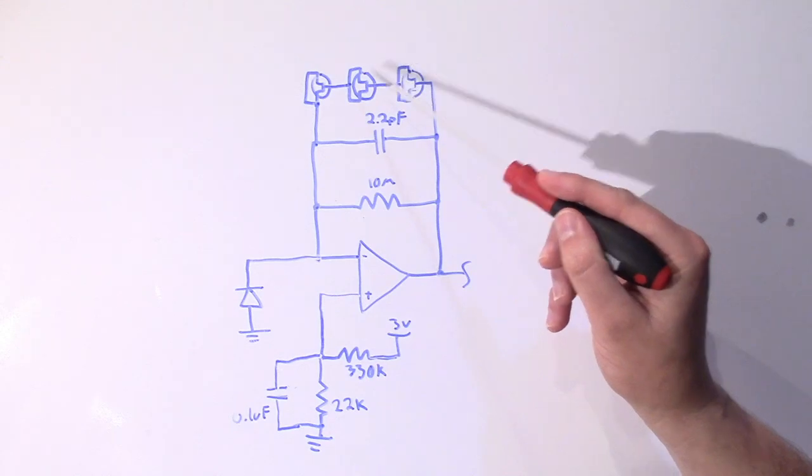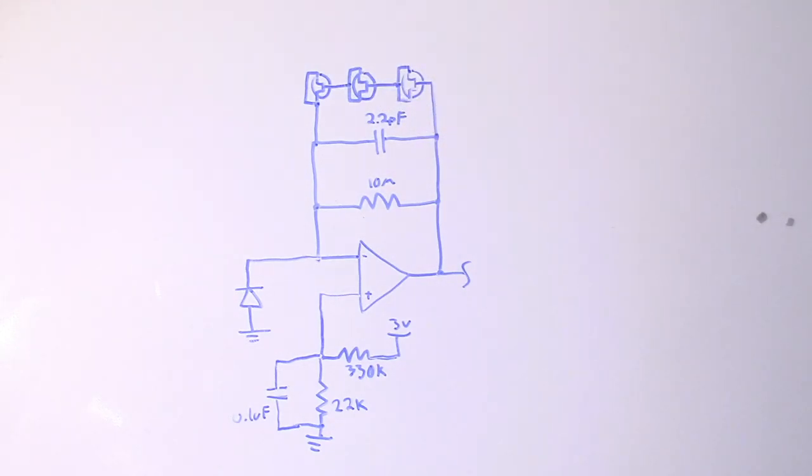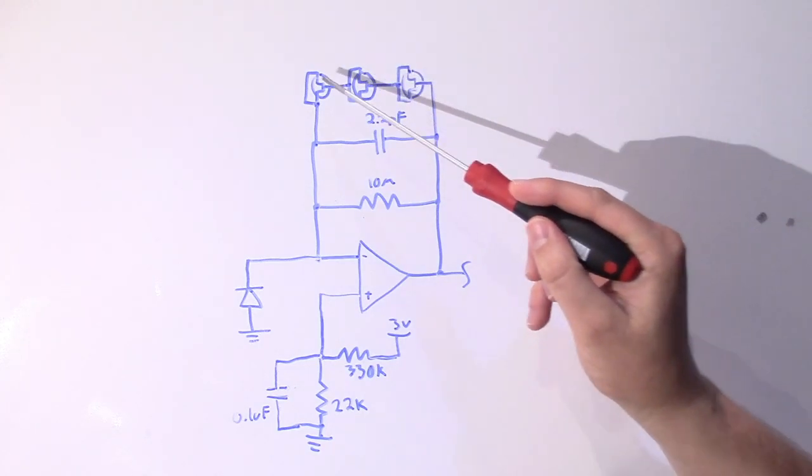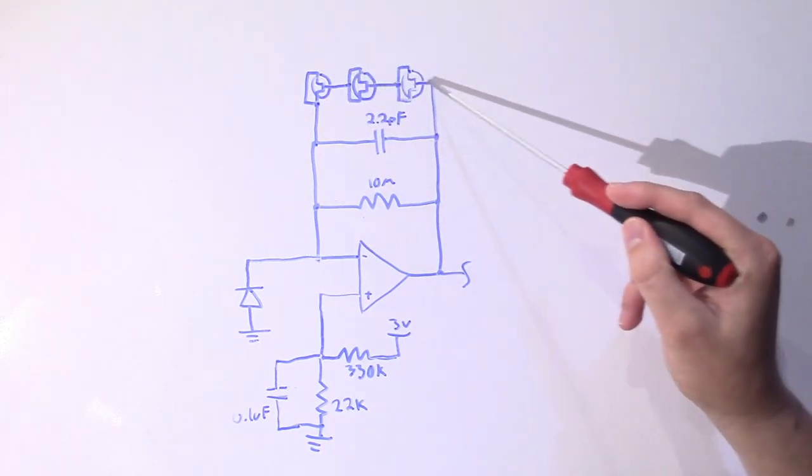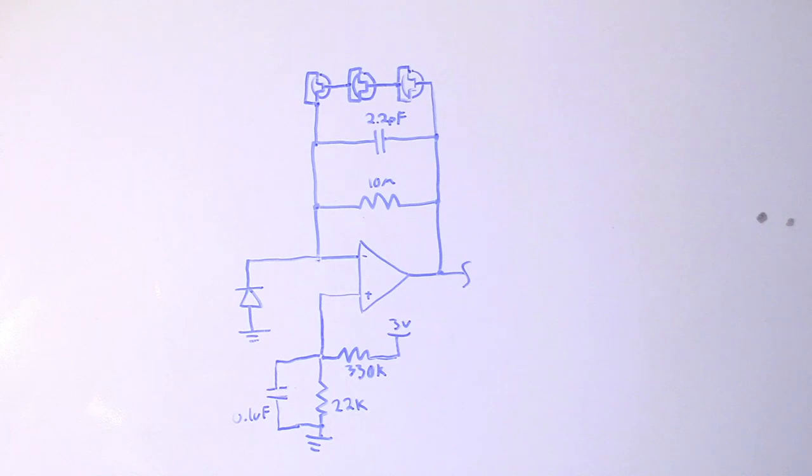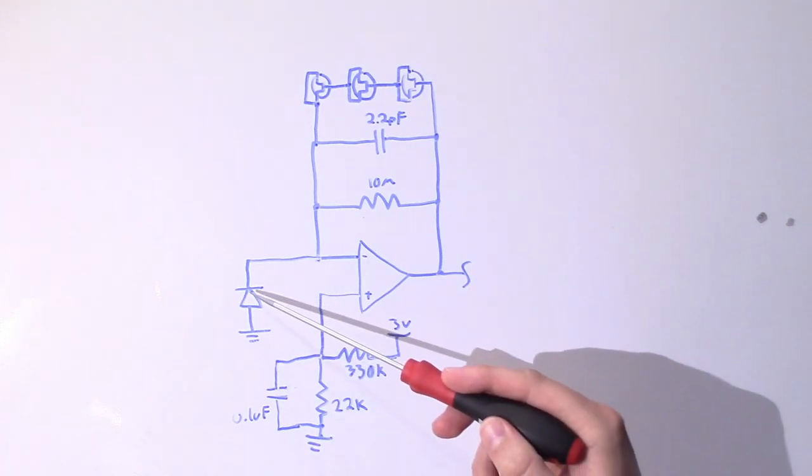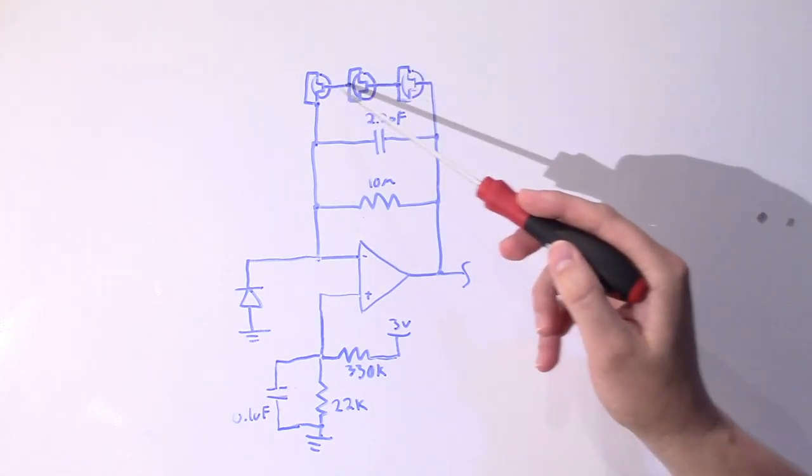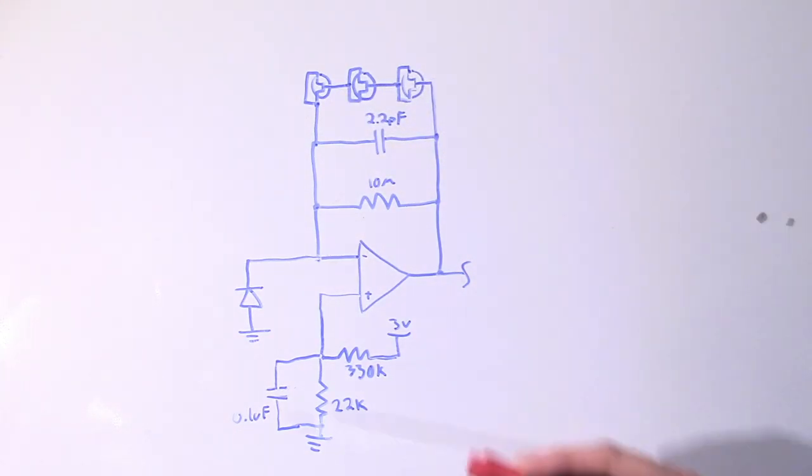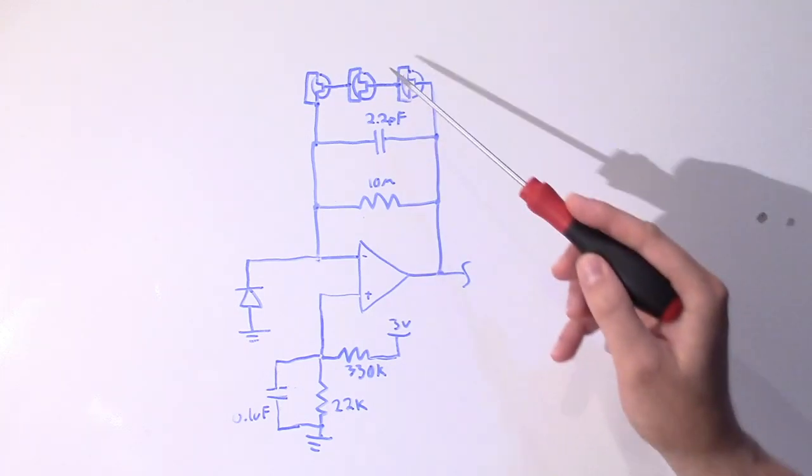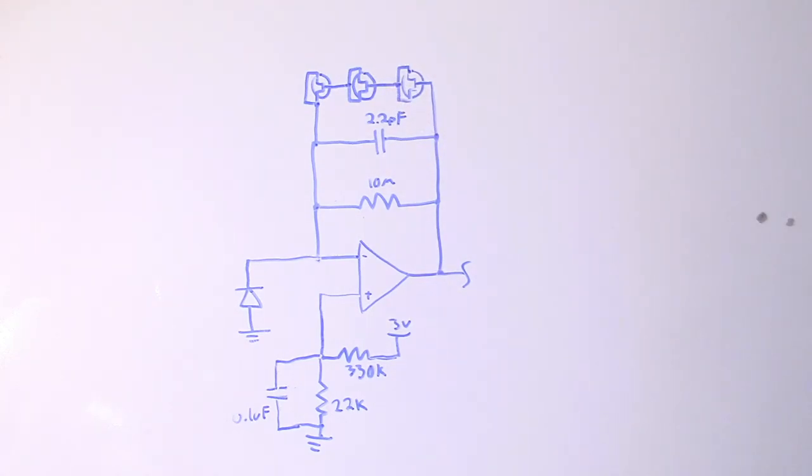Now, the reason I chose to use JFETs as diodes, instead of a typical silicon diode, is they tend to have a lot lower leakage current. So, the reverse leakage going through these is going to be a lot smaller, typically, than a normal silicon diode. So, we're going to leak less of our signal through this path. And, generally, leaking your signal through an unwanted path is undesirable. So, I went with JFETs here instead of a typical silicon diode.